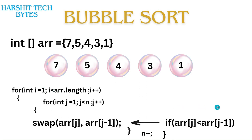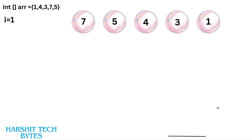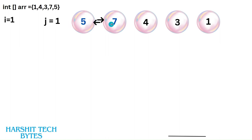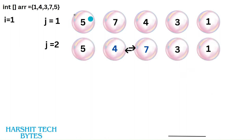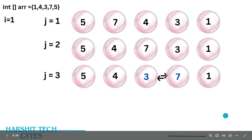So let's see. In the first iteration, i is 1 — meaning the outer for loop is 1 — and the inner for loop j is also 1. We check if the right element and the left element are in the correct order; if not, we swap them. In this step we swap 5 with 7, and when j becomes 2 we swap 7 with 4 because they are in the wrong order.